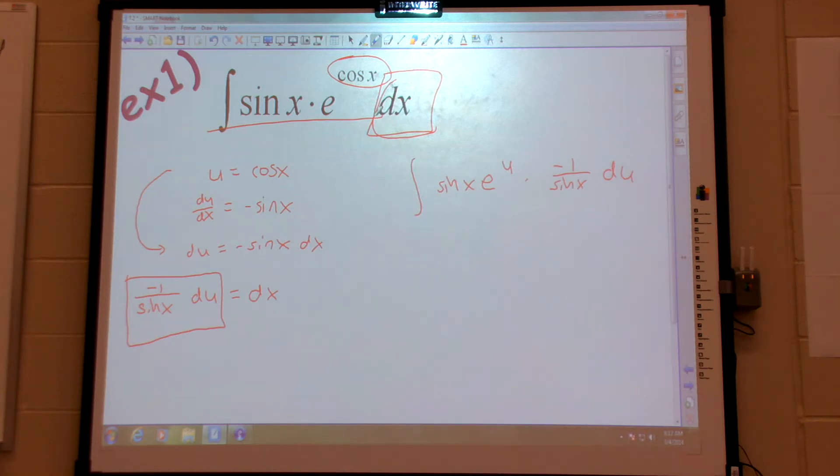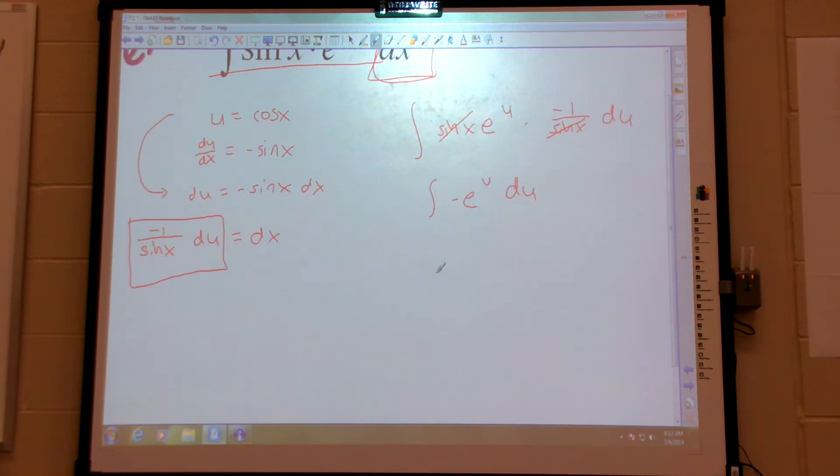Follow that. Now, if you did it right, everything with an x will cancel. Divided by sine, times sine, all of those cancel. So, now the integral is negative e to the u du. Now, isn't that a whole lot easier to do an anti-derivative of?